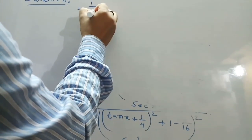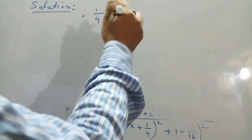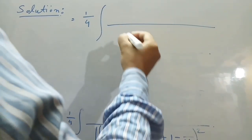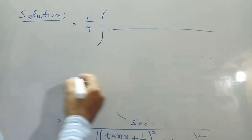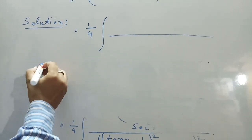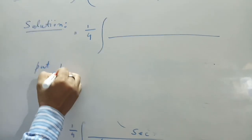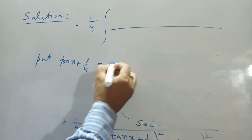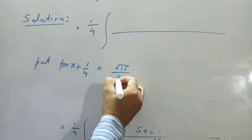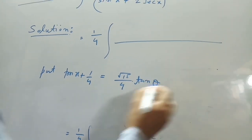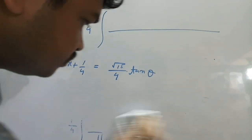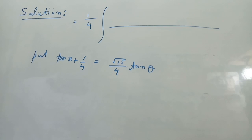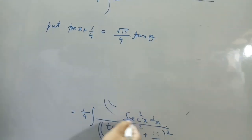Next step: 1/4 times the integral. Now we put the substitution: let tan x + 1/4 equal to (√15/4) tan θ. With this substitution, tan x + 1/4 = (√15/4) tan θ.